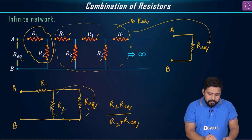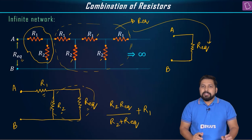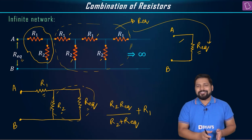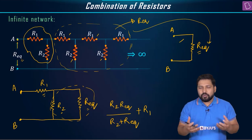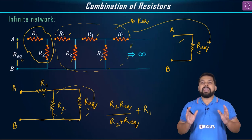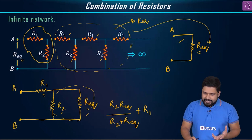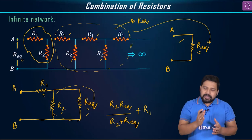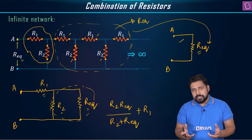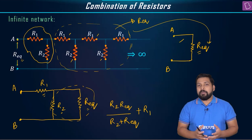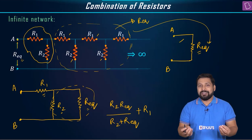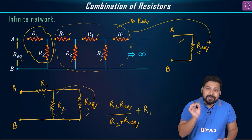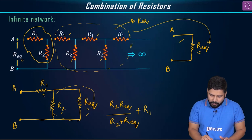This parallel combination is in series with R1, so the net effective resistance across A and B is R1 plus that parallel combination. But across A and B the net effective resistance was already defined as R equivalent. So we equate the two expressions. This gives us a quadratic equation in R equivalent, and on solving we get two roots — the negative root we ignore, since equivalent resistance cannot be negative. We keep the positive root.